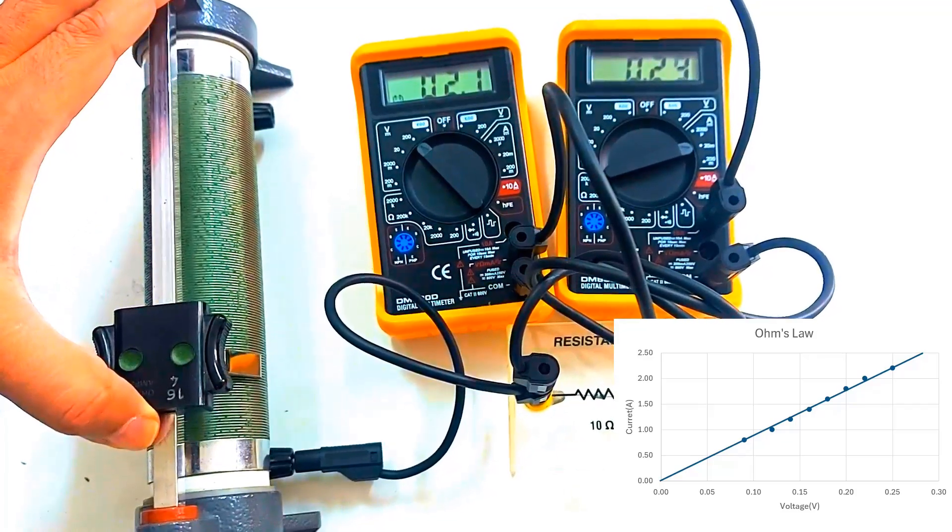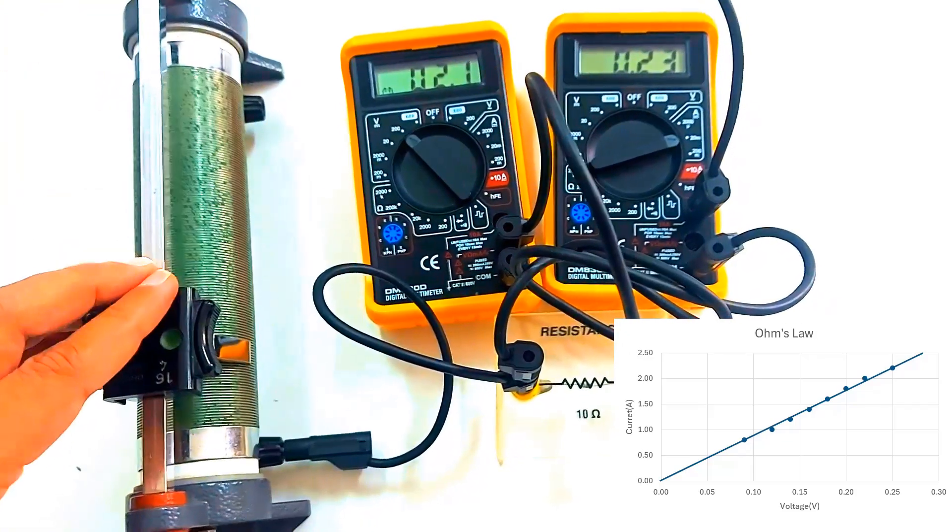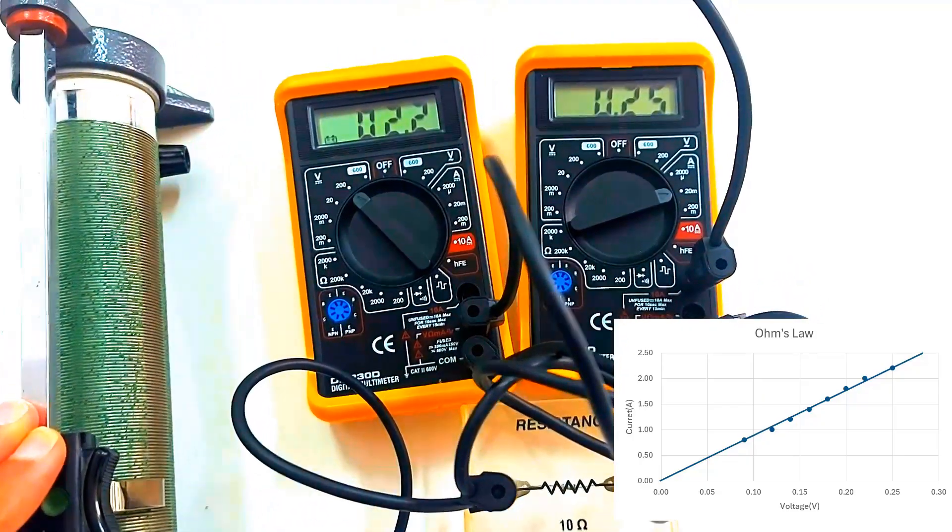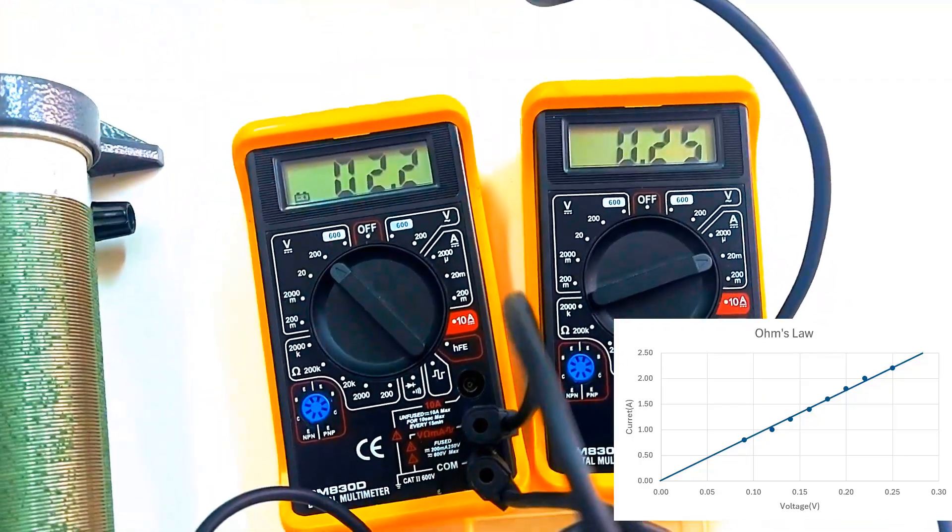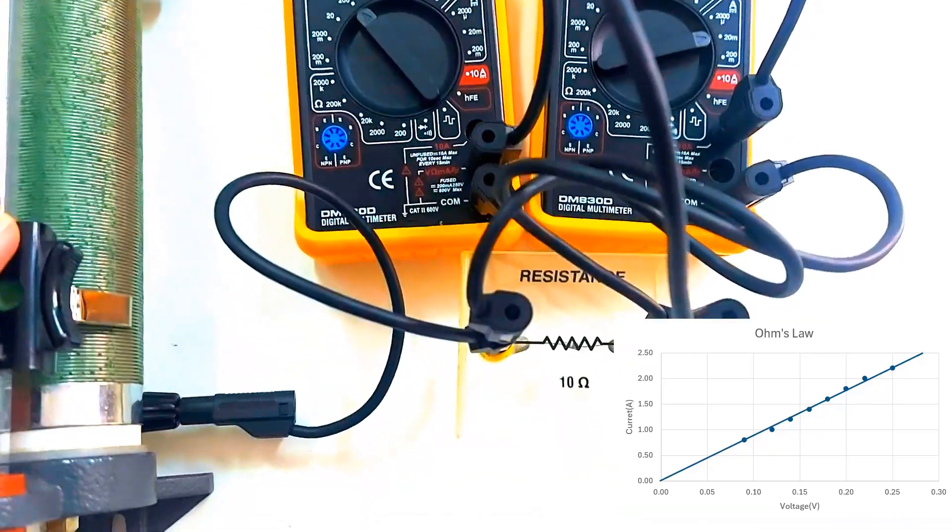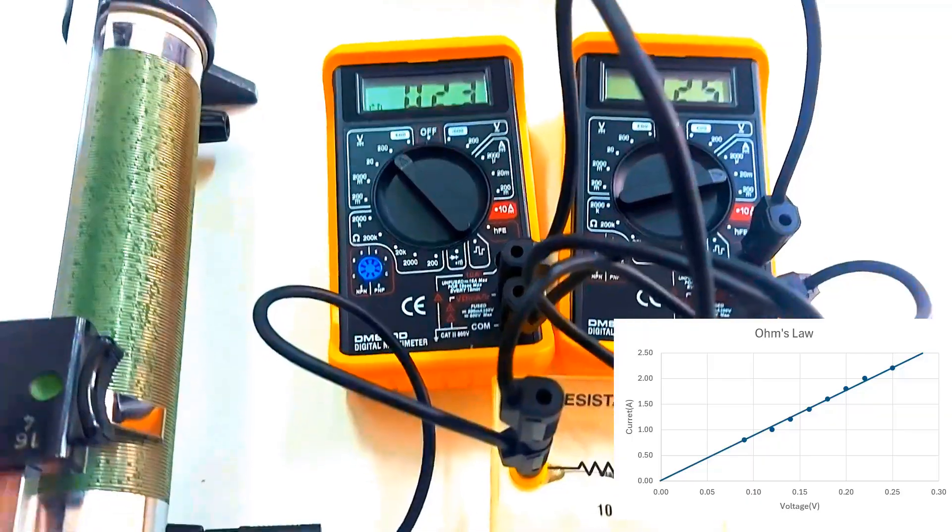Look at that line. Our fixed resistor is following Ohm's law beautifully. The voltage and current are in perfect harmony, proving our resistor behaves exactly as expected. That's a wrap on today's experiment.